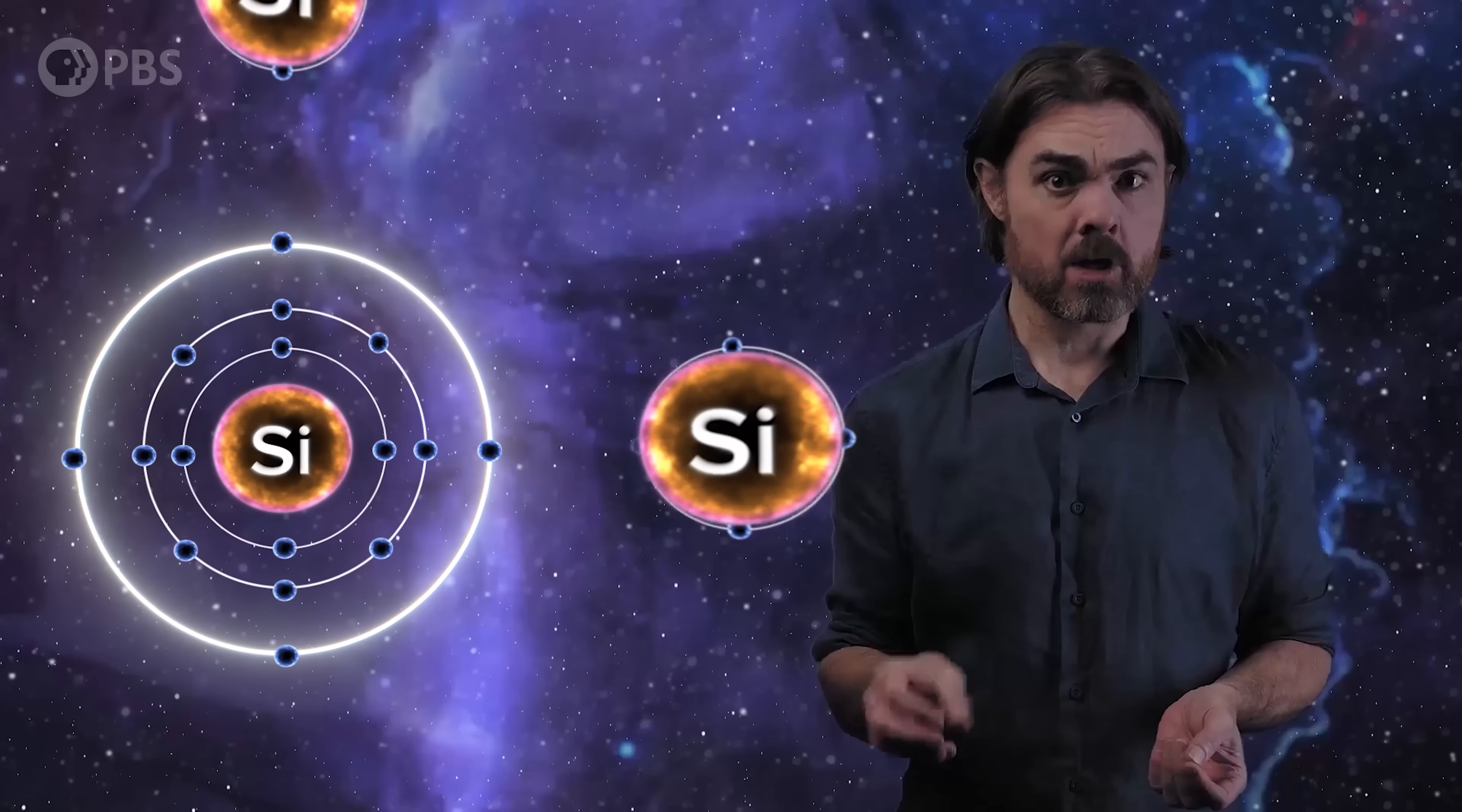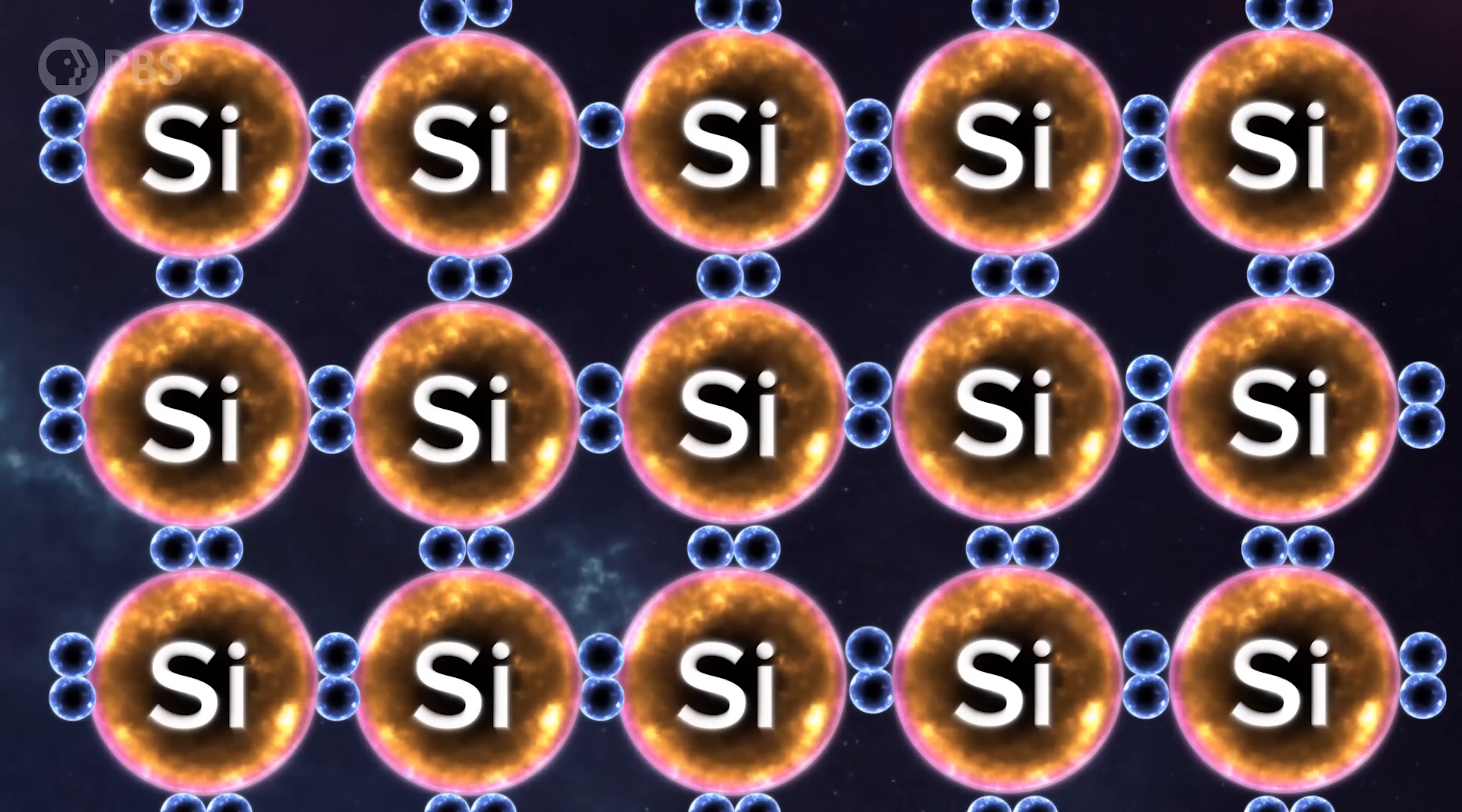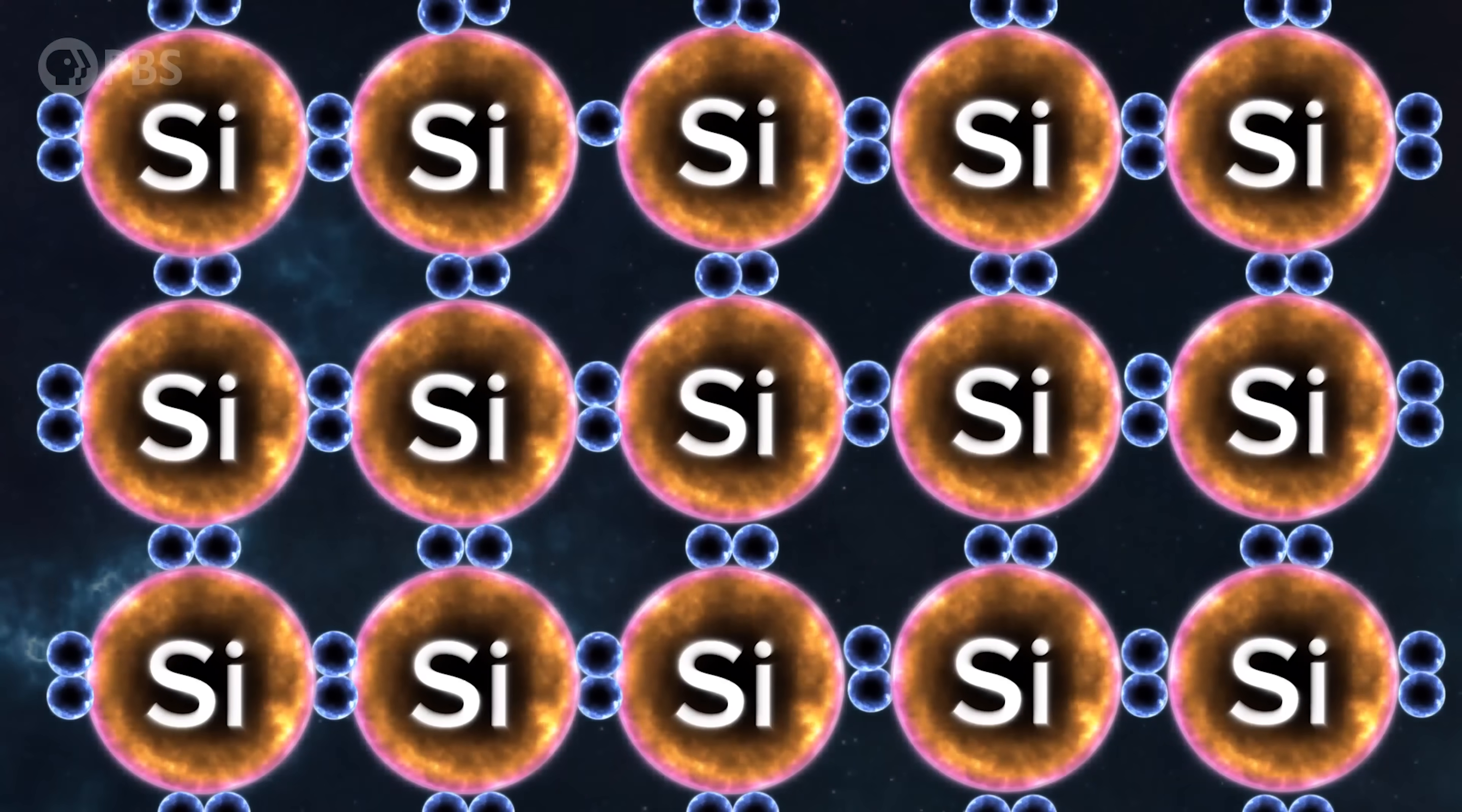The silicon atom has four electrons in the outer, or valence shell. Atoms are most stable with full valence shells, which means eight electrons. That's why silicon likes to form covalent bonds with four other silicons, and each of those with another four, forming this tetrahedral crystal lattice. We're going to depict this as a square grid in 2D to save on animation costs. The valence electrons are now locked in place by the now full valence energy level.